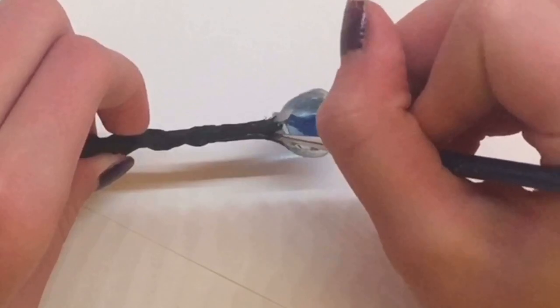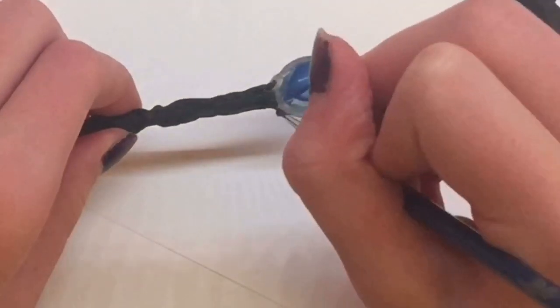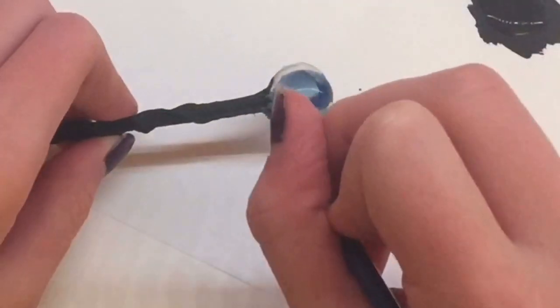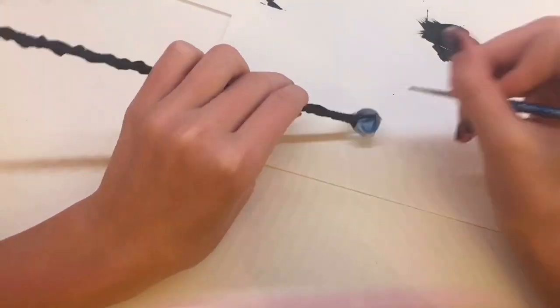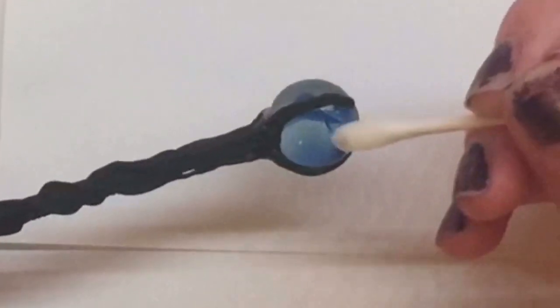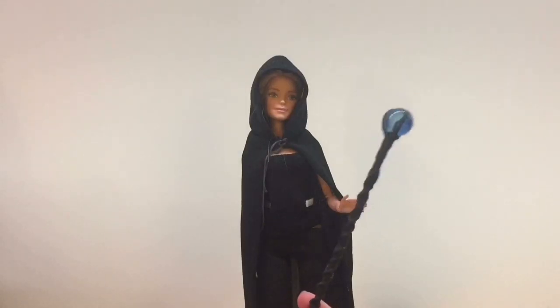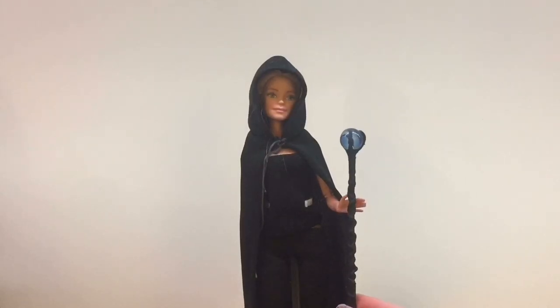Then I take my black acrylic paint again and paint all over this. I take a small paintbrush to paint the little clasps over the marble and try to be careful not to paint the marble. But if you accidentally do, just use a wet Q-tip to wipe off any paint before it dries. And now you have a really cool scepter to go along with the outfit.